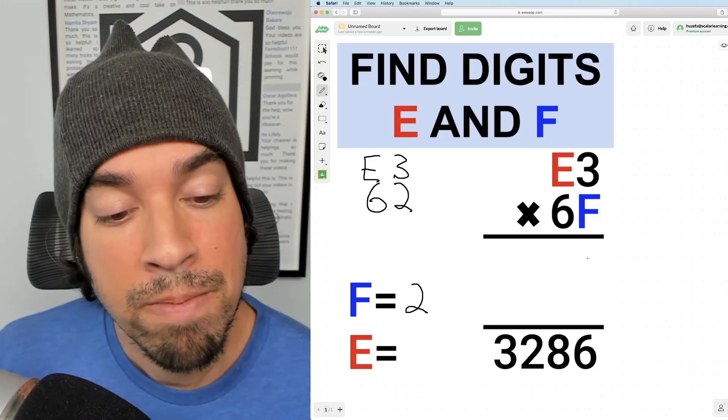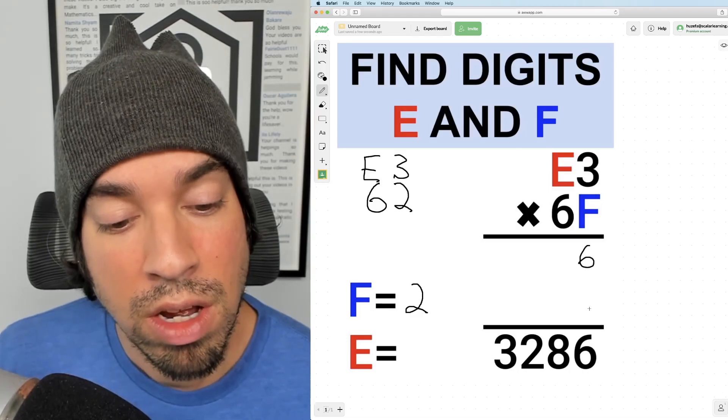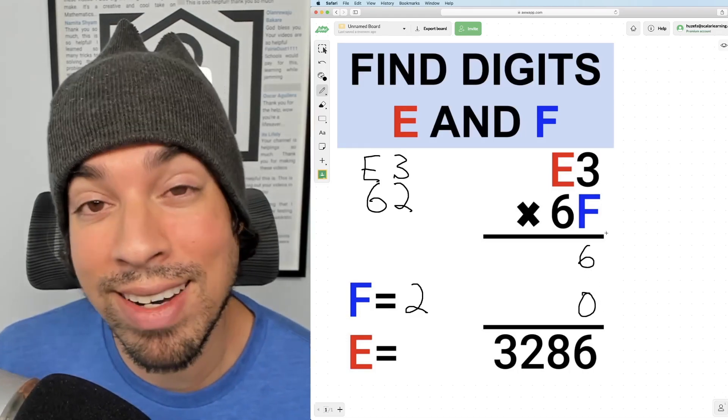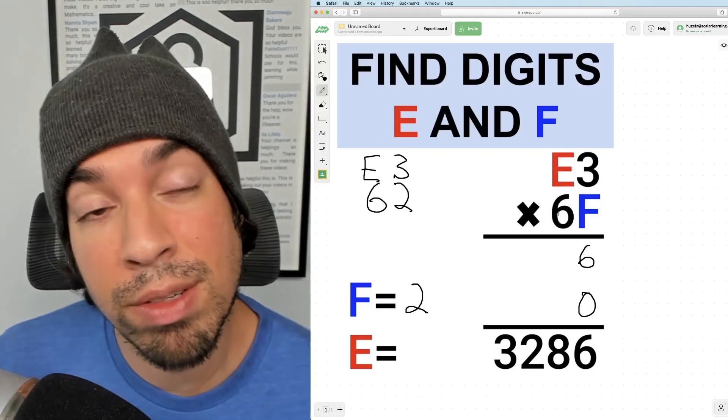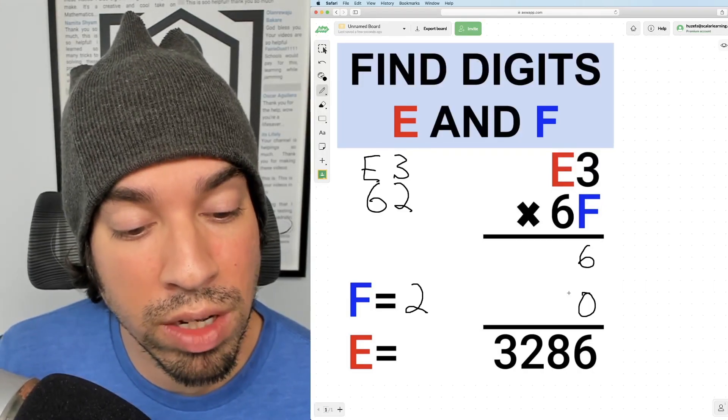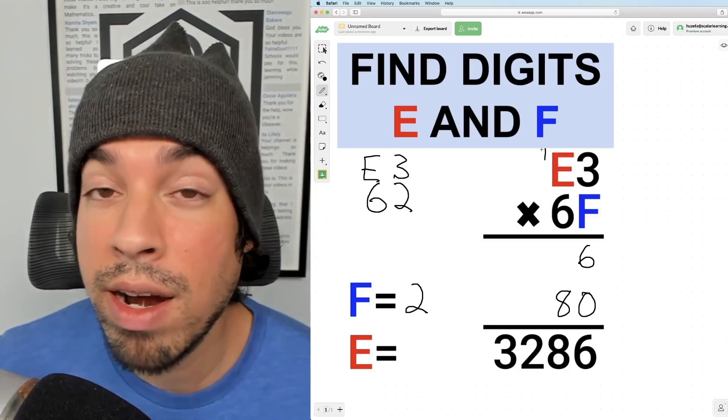So if we're assuming F is 3, then right here is going to be 6. We know that we're going to have a 0 in the next row because it's going to be 6 times 3 going down here. So let's play that out. We know that 6 times 3 will give us an 8 with a carry of a 1.